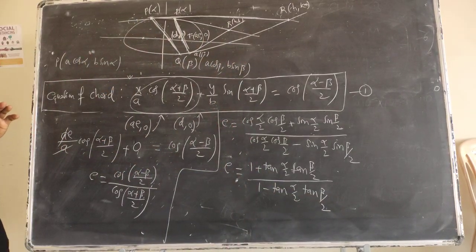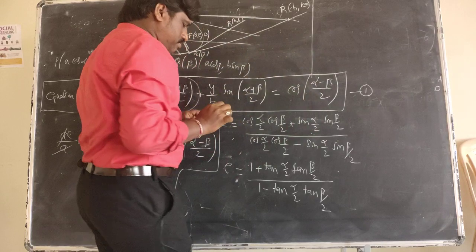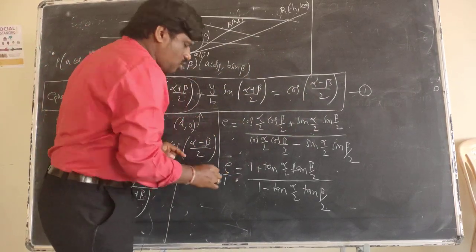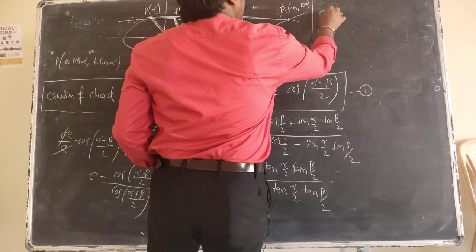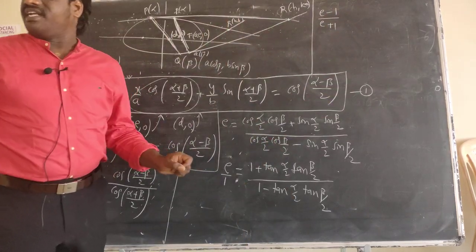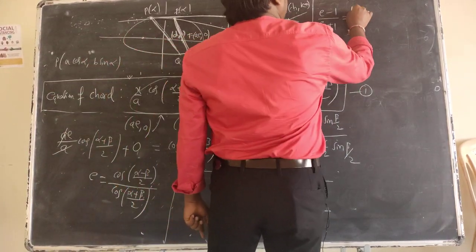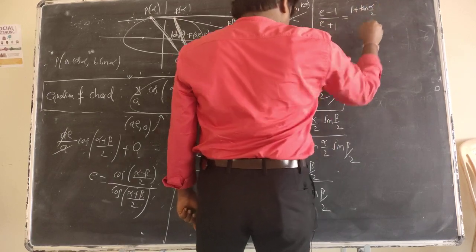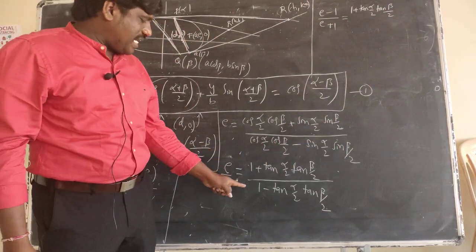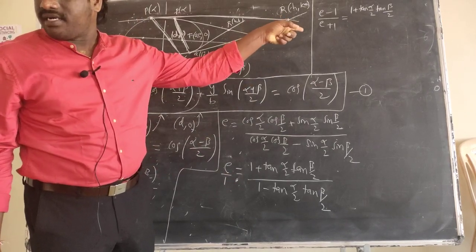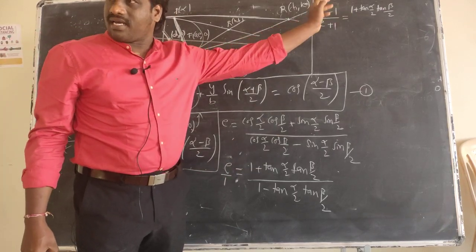Dividing numerator and denominator by cos(α/2)·cos(β/2), we get: e = [1 + tan(α/2)·tan(β/2)] / [1 − tan(α/2)·tan(β/2)]. Now I apply componendo-dividendo. Using e/1, by componendo-dividendo: (e−1)/(e+1) equals the numerator minus denominator over numerator plus denominator.